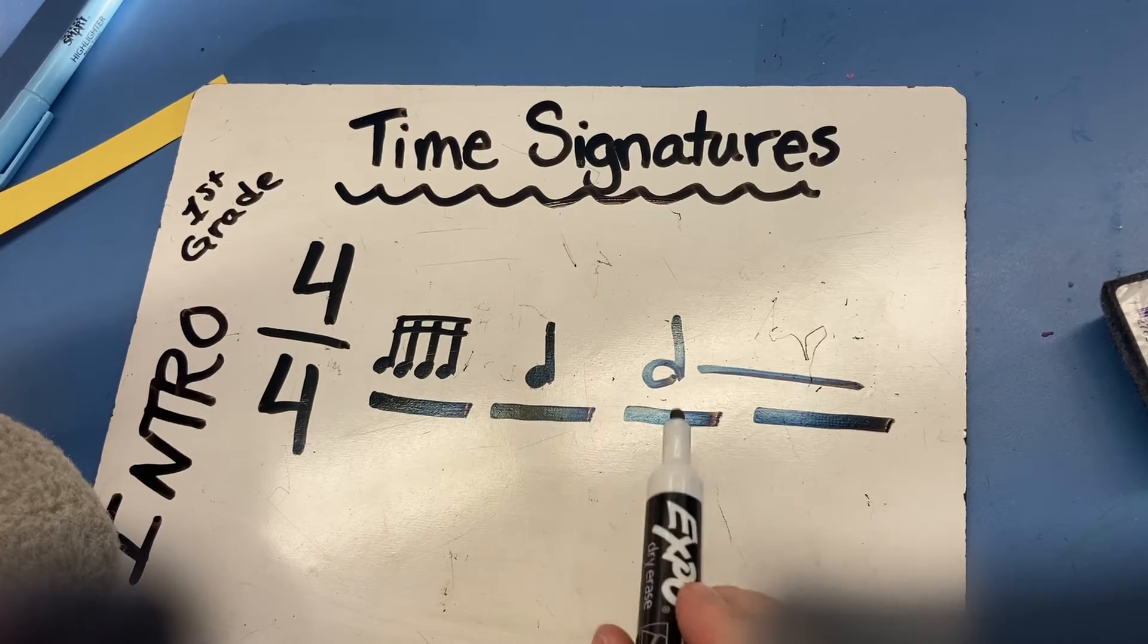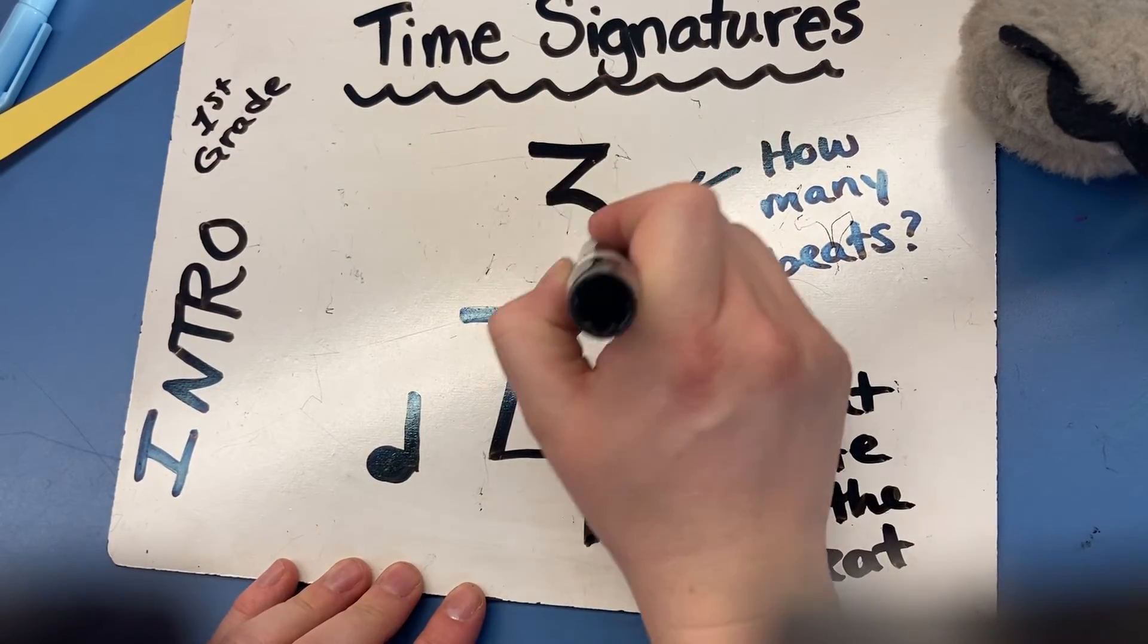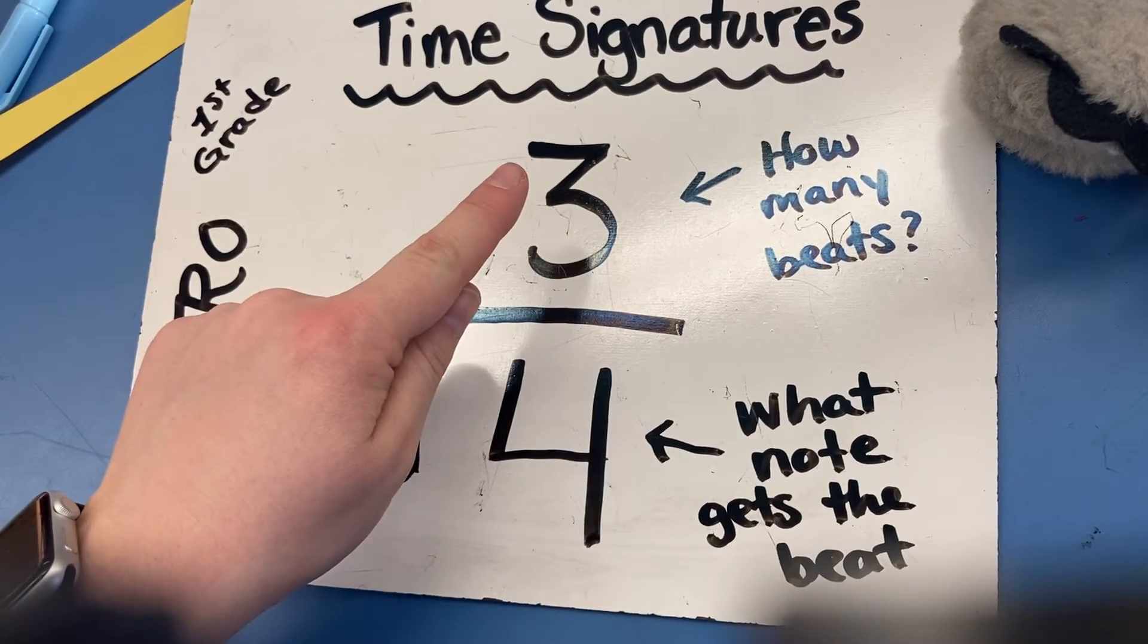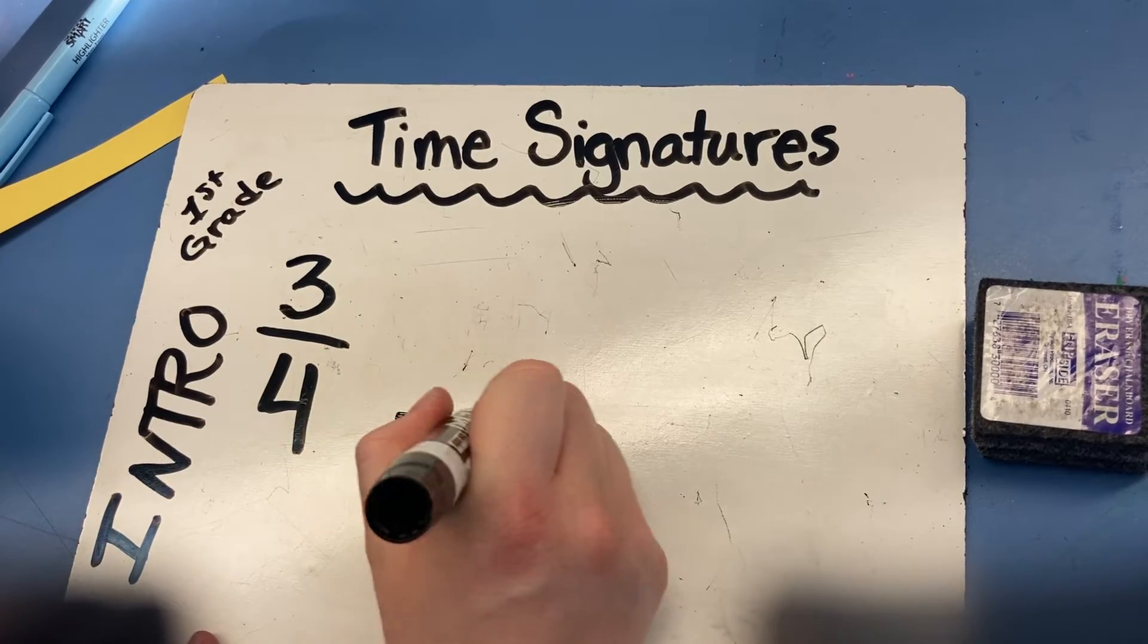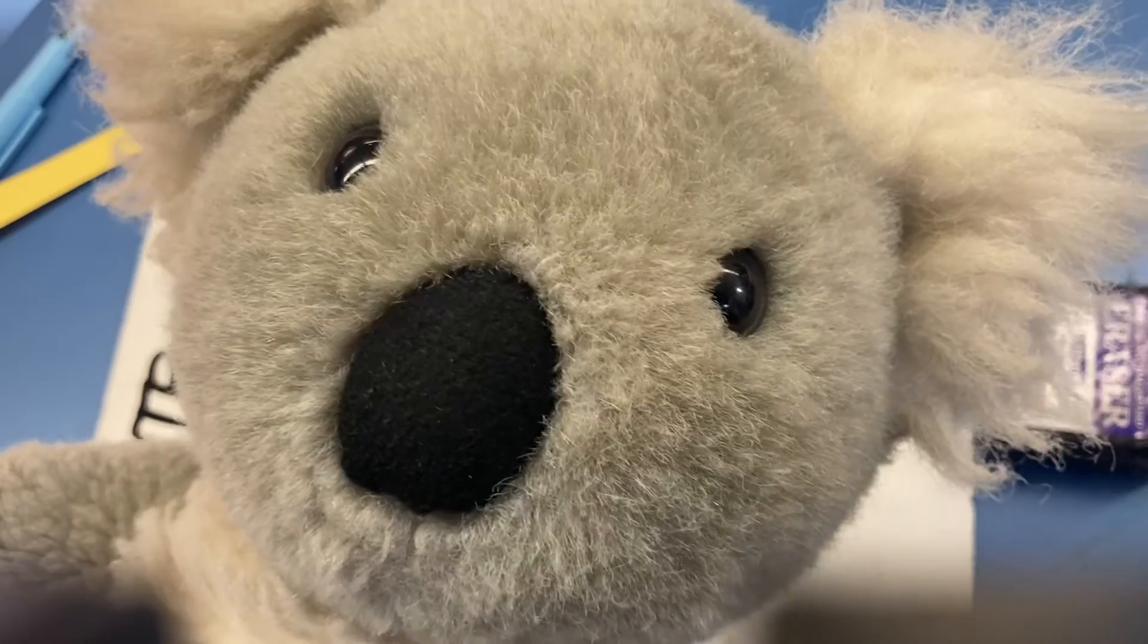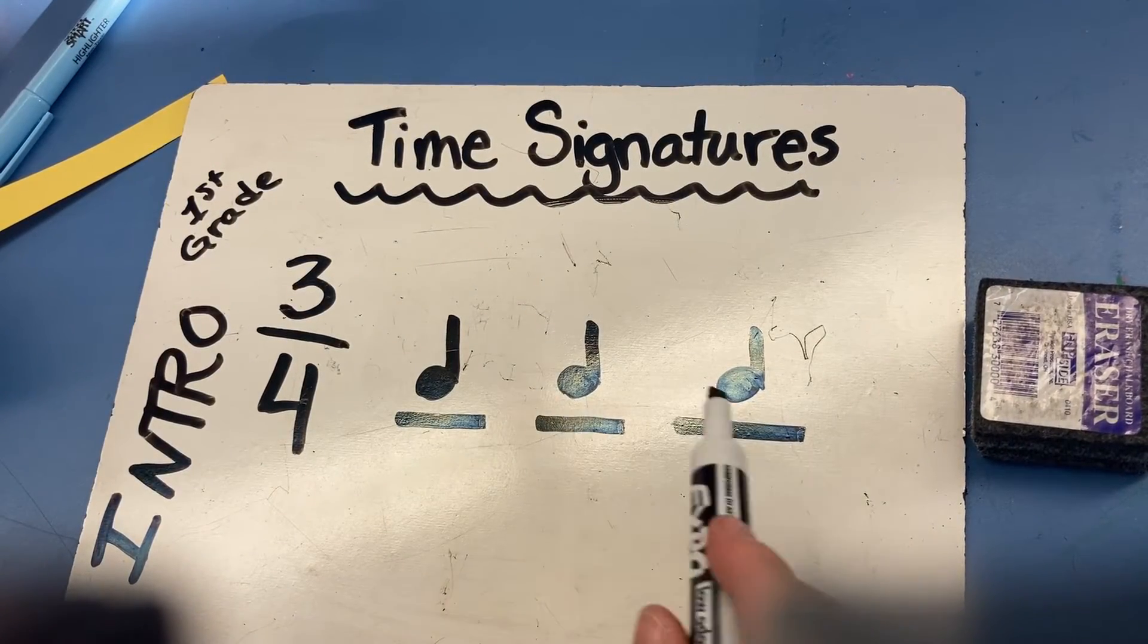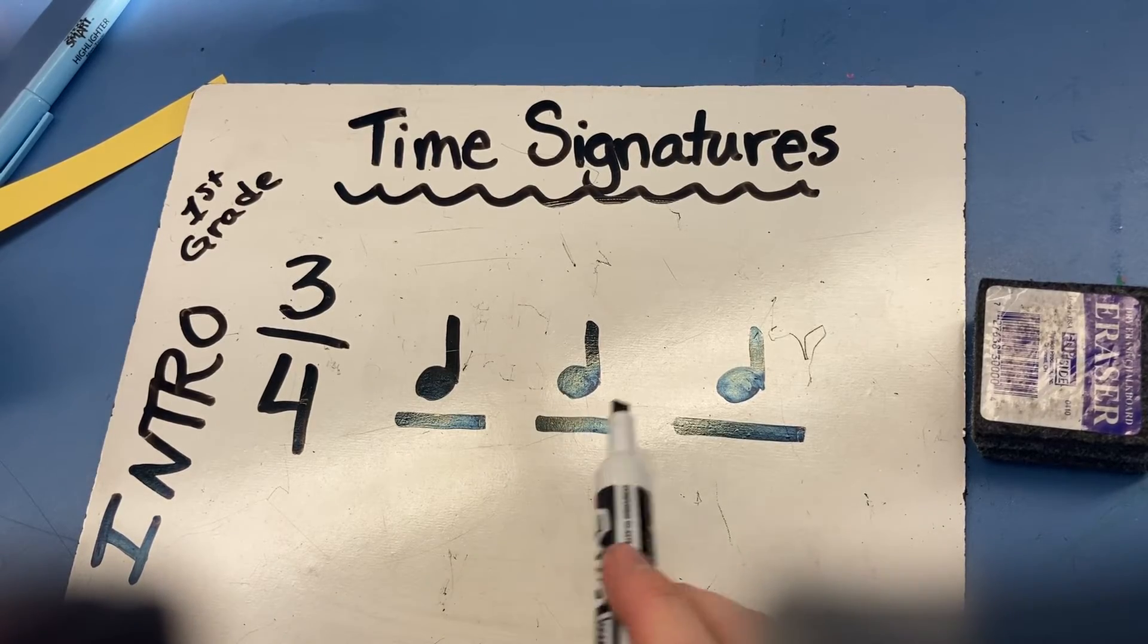If I change the top number, that's going to alter the number of beats. How many beats? Three beats. In this time signature, the 3 is on top. That means we only have 3 beats. Let's start out with an easy rhythm.